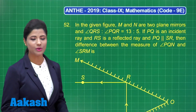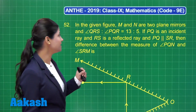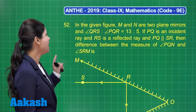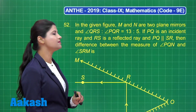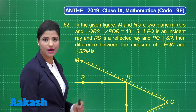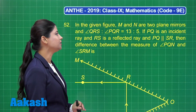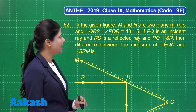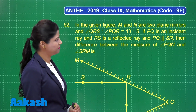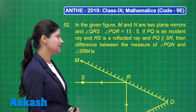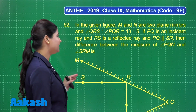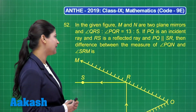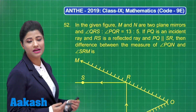Let us take up question number 52. It states that in the given figure M and N are two plane mirrors. Angle QRS to angle PQR is 13 is to 5. If PQ is an incident ray and RS is a reflected ray and PQ is parallel to SR, then the difference between the measure of angle PQN and angle SRM is to be found.